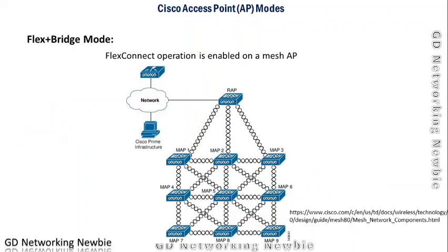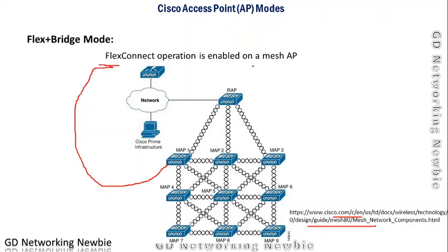Flex plus bridge mode enables FlexConnect operation on mesh access points. When FlexConnect is enabled on mesh access points, the result is this flex plus bridge mode.